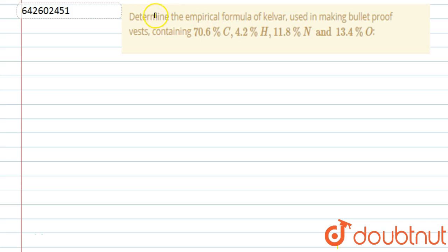In this question, we have to determine the empirical formula of Kevlar used in making bulletproof vests containing 70.6% carbon, 4.2% hydrogen, 11.8% nitrogen, and 13.4% oxygen. We are given the composition of these carbon, hydrogen, nitrogen, and oxygen.